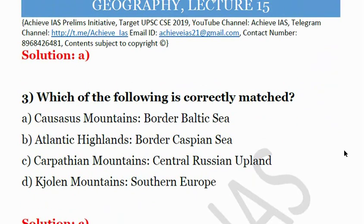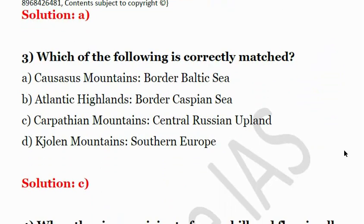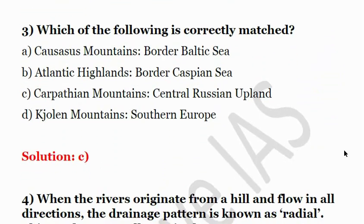Third question: Which of the following is correctly matched? Options include Caucasus Mountains bordering the Baltic Sea, Atlantic Highlands bordering the Caspian Sea, Carpathian Mountains in Central Russian Upland, and Kazolan Mountains in South Europe. The answer is C — the Carpathian Mountains are in the Central Russian Upland.